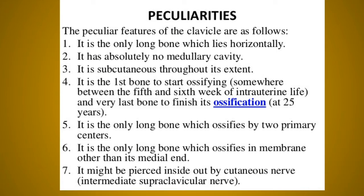The clavicle is the only long bone which has two primary centers of ossification — the rest have only one. There is no medullary cavity present in the clavicle, and it is occasionally pierced by the middle supraclavicular nerve.